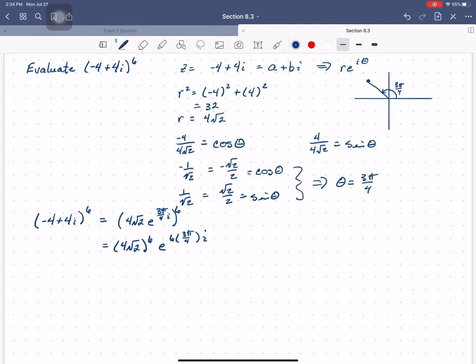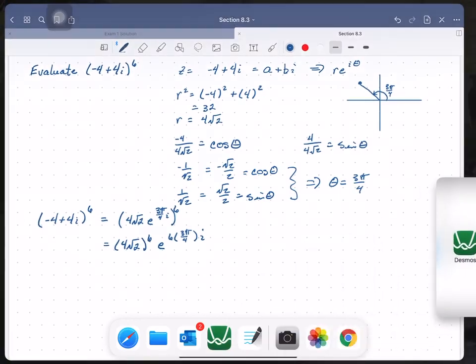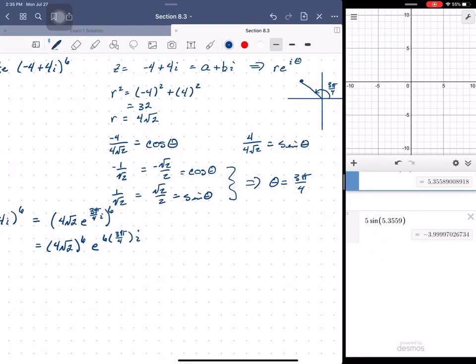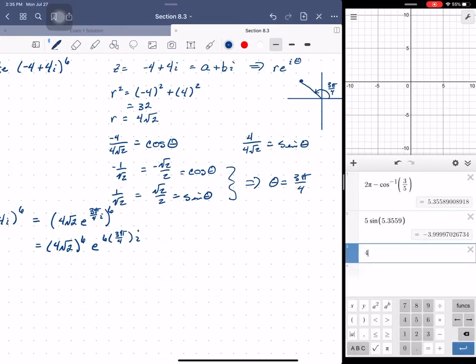And let's see, what is 4 to the sixth power? Well, Desmos knows that answer. 4 to the sixth power is 4,096. And we want to multiply that by the square root of 2 to the sixth power. You can do that, or you can do 2 to the third power, which is 8.